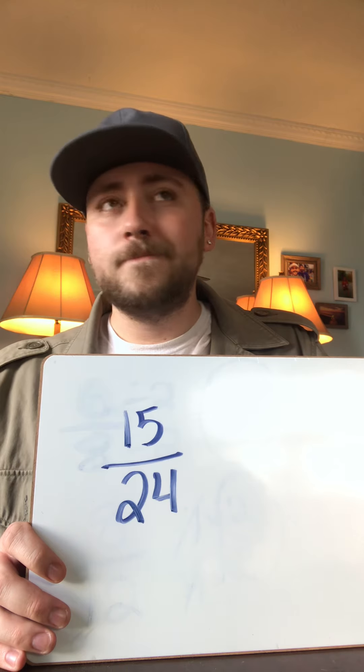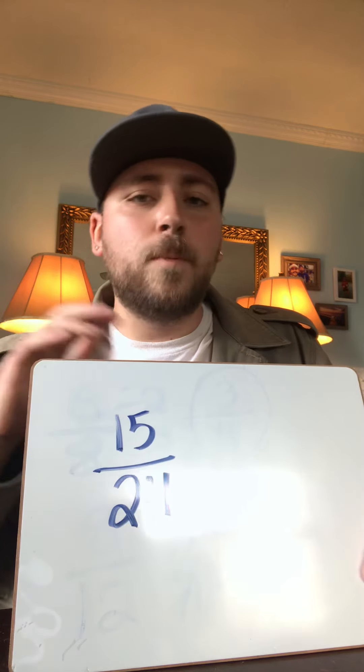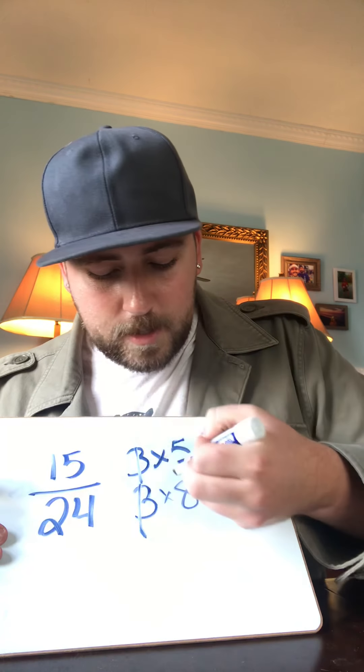I'm going to challenge you — here's one I want you to try on your own: fifteen over twenty-four. I know, huge jump in numbers, but we can do this! Think about what number fifteen and twenty-four both have in common. Maybe three? So I've got three times five on top, and for twenty-four, three times eight. I'm going to cancel out my threes because they're the same, which leaves me with five-eighths.